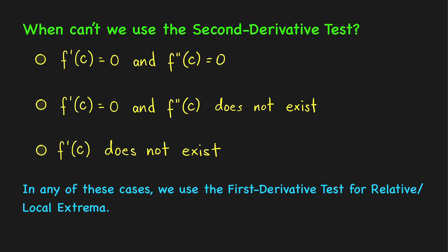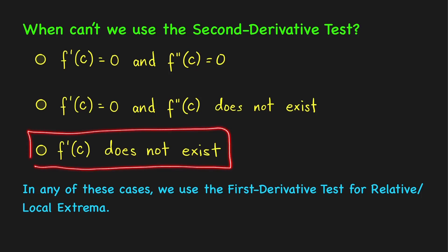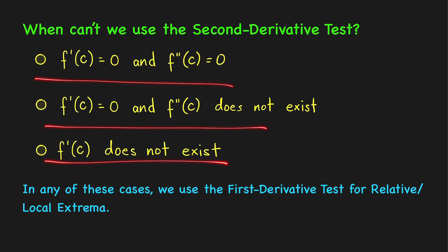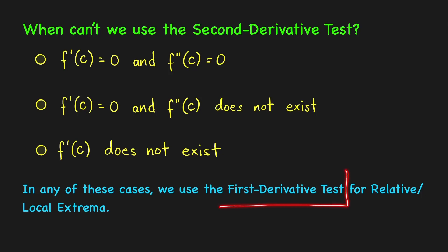Lastly, since we require that the first derivative must be equal to zero, we cannot use the second derivative test when the first derivative does not exist. In any of these cases, we use the first derivative test to determine the local extrema of the function f.